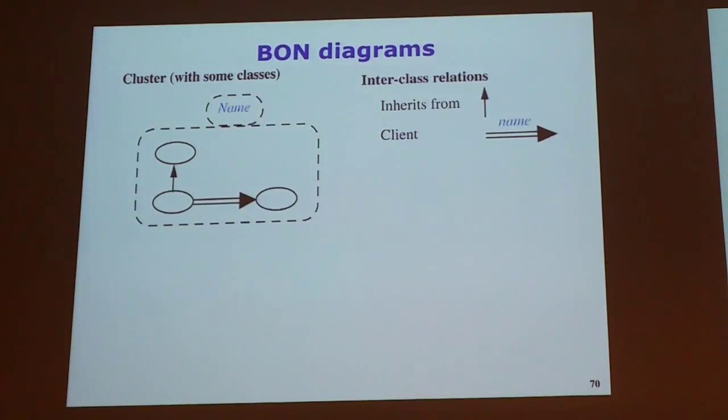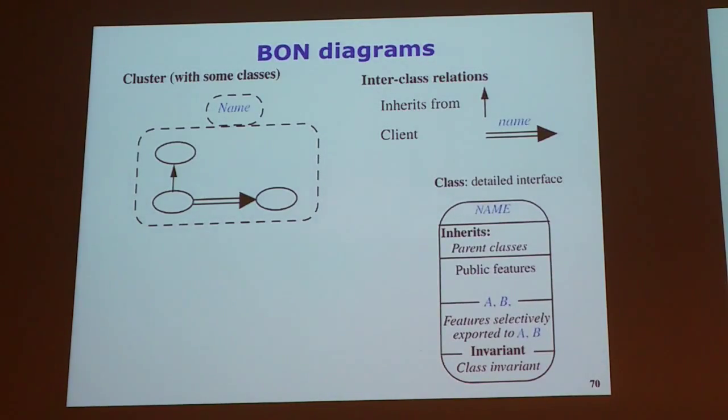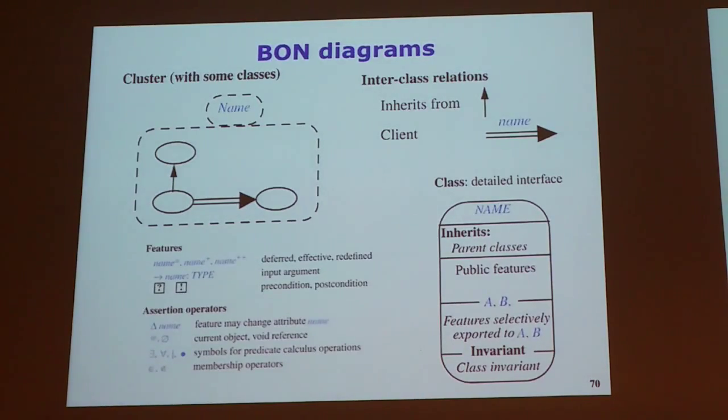Okay, that's the bond diagram. You can see that's inheritance, and that's client-supplier. And, that's the class notation here. And then, you also have to include the, you can see here, you have the precondition, what to be satisfied beforehand, and what to be satisfied afterwards, the feature. So, pre and post conditions. Okay?